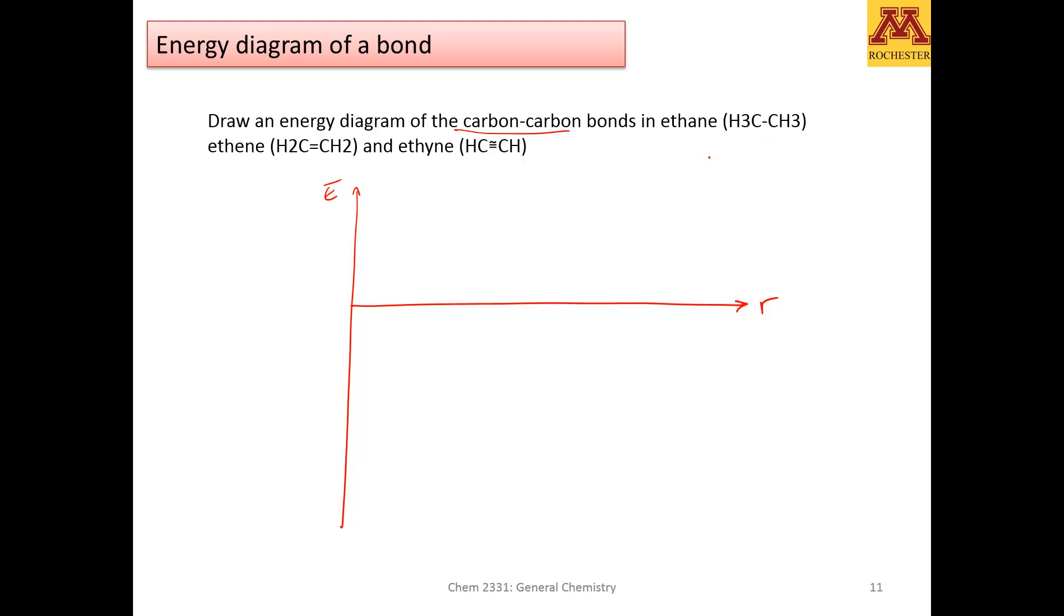We know that the higher the bond order, so if you have a triple bond, it'll be shorter, the bond will be shorter, and the bond will be stronger. So it's safe to say that this compound will have the strongest and the shortest of the bonds, and ethane will have the weakest and the longest of the bonds.